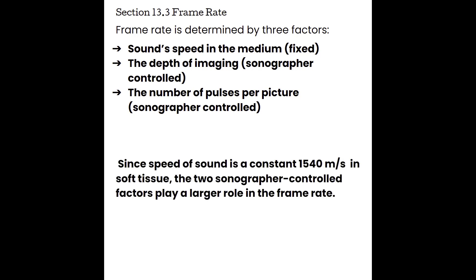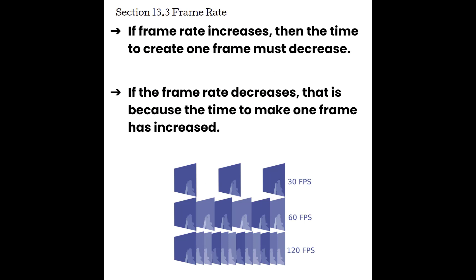If one frame needs 100 pulses versus a frame needing 300 pulses, all those pulses have to send their information back to the machine, and then the machine will process and display them. If it takes longer to get all those pulses out and their information back, it takes longer to display a frame, and therefore fewer frames are produced per second. Since the speed of sound is the constant 1540 m/s in soft tissue, the two sonographer-controlled factors — imaging depth and number of pulses per frame — play the larger role in frame rate.